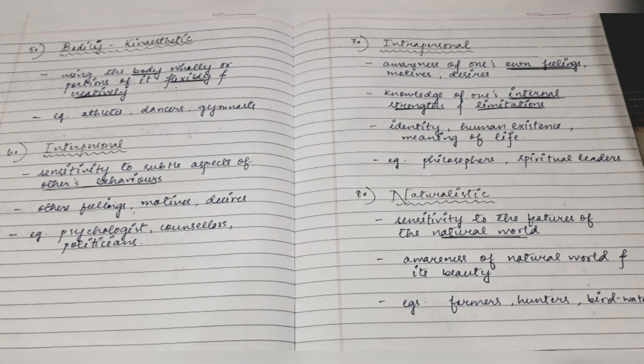People high on intrapersonal intelligence generally have a very fair sense of knowledge of their own identity and human existence, and they are keen to know about the meaning of life. Philosophers and spiritual leaders are generally high on this type of intelligence. The last and eighth type is Naturalistic Intelligence, as given by Howard Gardner under the Theory of Multiple Intelligences.